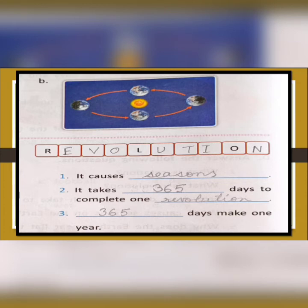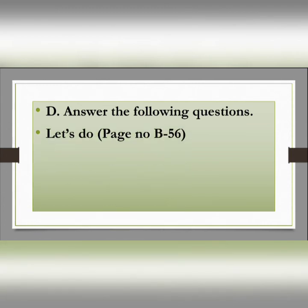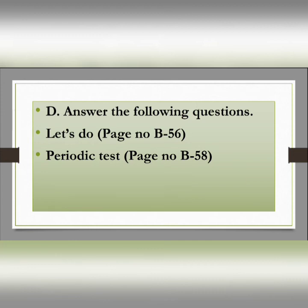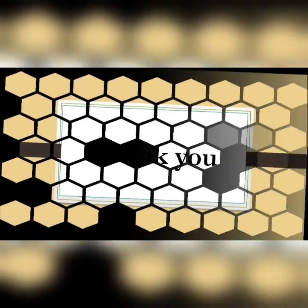These two questions from the Let's Do part you have to do in your book. Only the answers of question D you have to write in your classwork copy. Let us recall what we discussed today: we discussed the answers of question D — five questions in total — and the Let's Do part on page number B56. Question A is your home assignment and question B answers we discussed in this video, to be written in your book. In our next class we will discuss questions given as periodic test on page number B58 and model test paper on page number B59. That's all for today, thank you everyone.